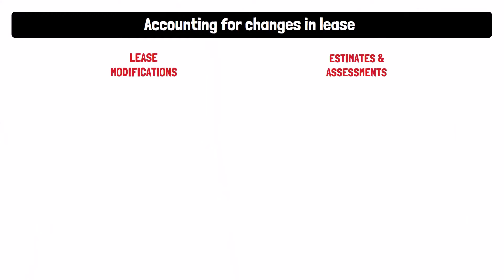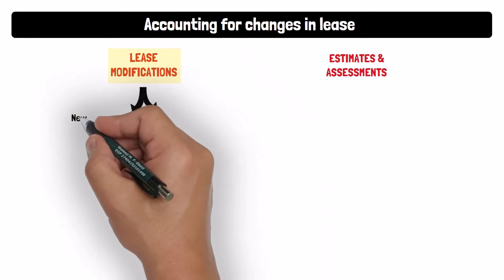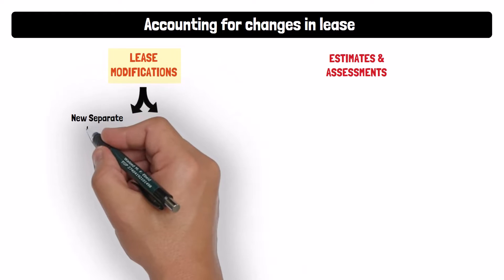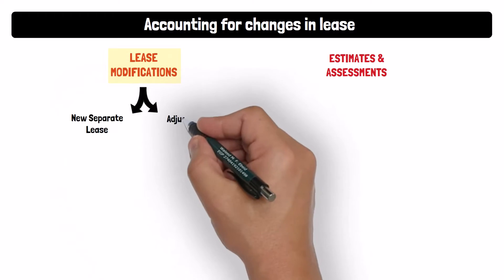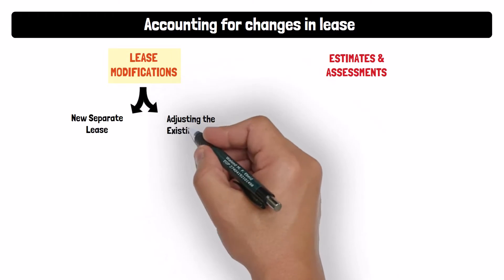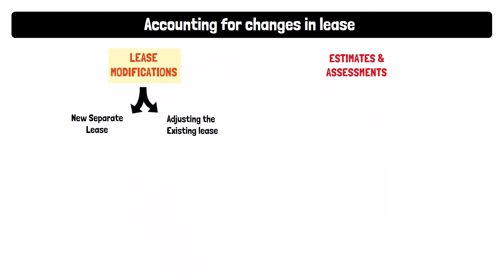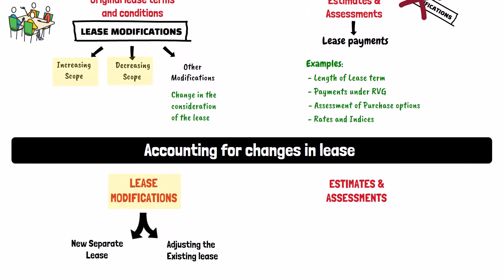So, let us see how to account for both categories of changes. We will start first with the accounting for lease modifications. Accounting for lease modifications involves either accounting for the modification as a new separate lease, or accounting for the modification by adjusting the original lease. That accounting depends on whether the modification is an increase or decrease in the scope of the lease, or any other modification that is neither an increase nor decrease in scope.